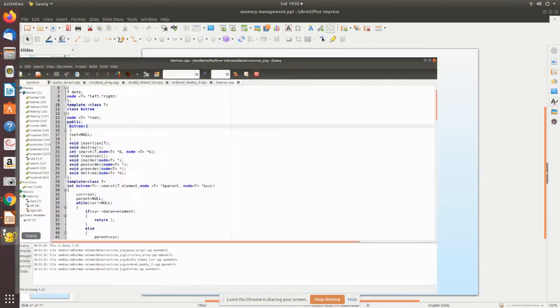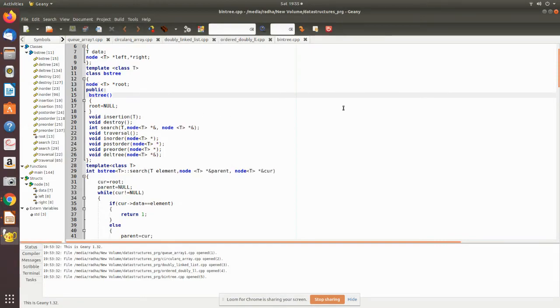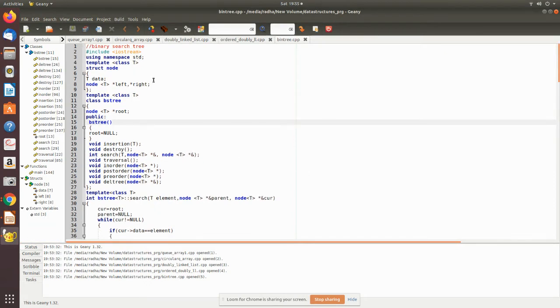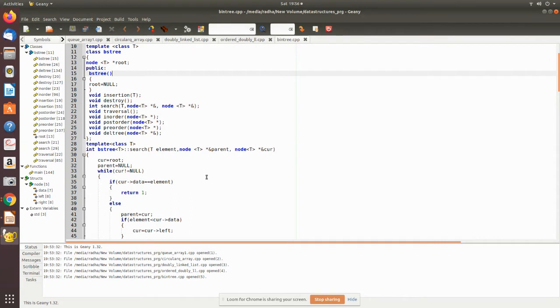For example, if you see this program here, this is a binary tree manipulation, a binary search program. Here we declare a structure, a data structure, then we declare some classes. What we think is this is one definition, then we see this as another declaration where inside consists of many method declarations - insertion, destroy, search.